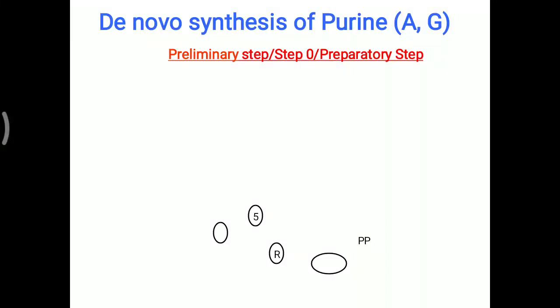Today's topic is about de-novo synthesis of purine, particularly adenine and guanine. The preliminary step, otherwise called the preparatory step, starts from ribose 5-phosphate.